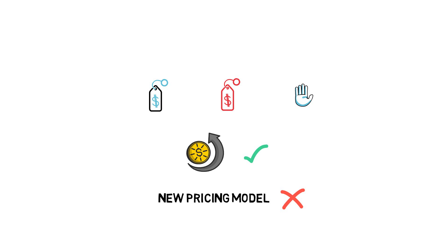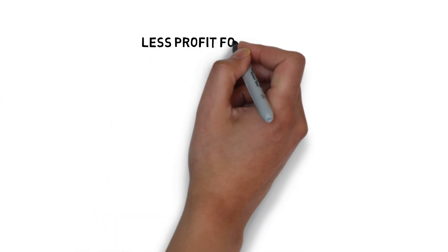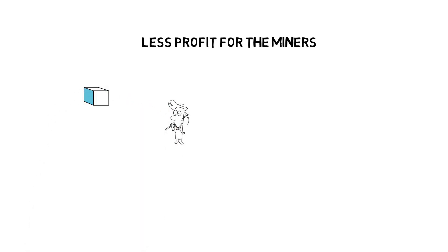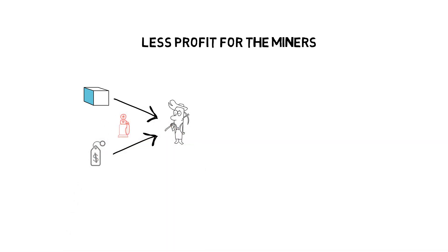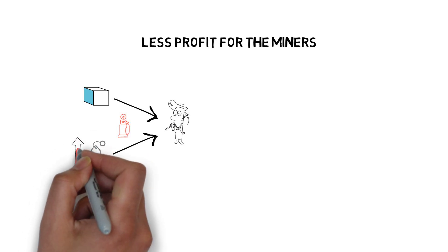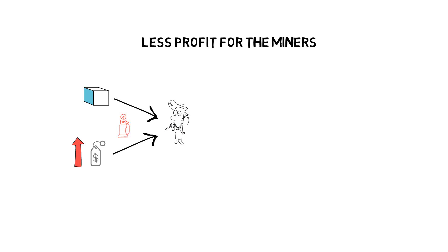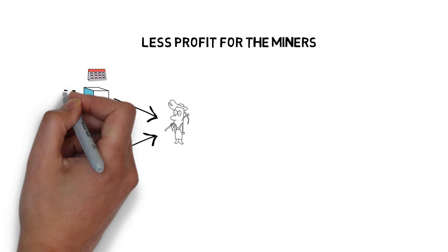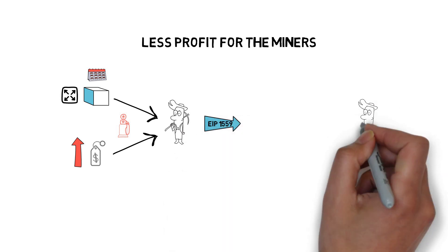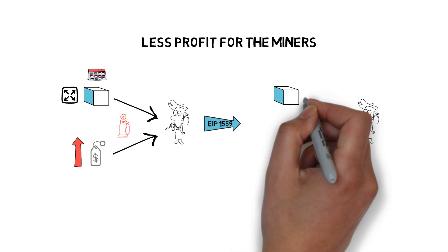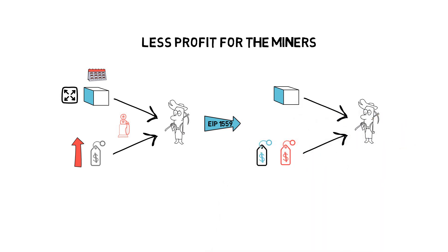Changes proposed in EIP-1559 have significant implications. One is less profit for miners. In the current fee system, miners receive both the block subsidy reward and the entire gas fee. With the recent high gas prices caused by DeFi, miners were able to collect more money from fees than from block rewards, even though historically block rewards were always much bigger. After EIP-1559 is implemented, miners would only receive the block reward plus the miner tip. This is why most miners are quite reluctant about the proposal, suggesting to push the change to ETH 2.0.